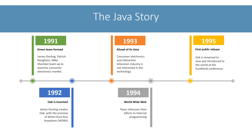On the 23rd of May 1995, Sun Microsystems made the first public release of Java. With the explosion of the World Wide Web, Java found huge success and became one of the dominant technologies of the Internet.